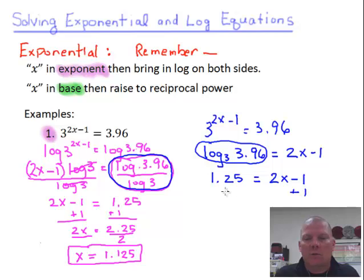Now, let's go ahead and solve this the rest of the way. Add 1 to both sides, just like we did in the last equation. And we get 2.25 equals 2x. Divide both sides by 2. And again, we get that same answer. 1.125 is x.